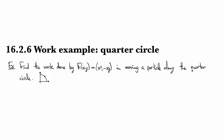In this example, we're going to compute the work done by this vector field here, x squared minus xy, in moving a particle along the quarter circle counterclockwise around the origin, like so.